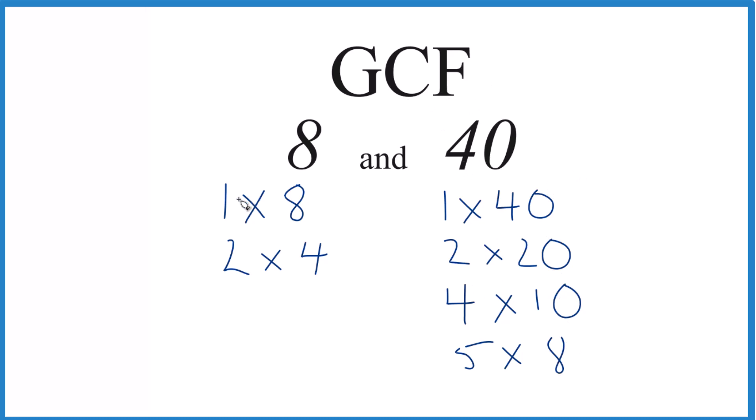So we have our factors. Let's look at common factors. We have 1, that goes into 8 and 40, 2, 4, and then we have 8, and that is the greatest factor that goes into both 8 and 40 evenly.